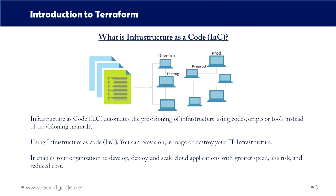First, we will understand what infrastructure as code is. Infrastructure as code means that if you are creating your infrastructure with the help of scripts, files, or any tools, these techniques are considered infrastructure as code. For example, if you have a shell script with a sequence of commands to create an EC2 on AWS cloud, that is considered infrastructure as code. It helps us automate the entire infrastructure provisioning using code, scripts, or tools instead of creating infrastructure manually.